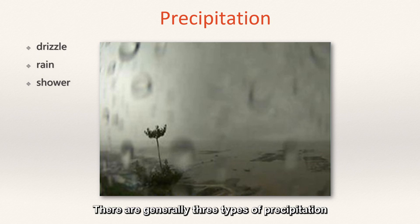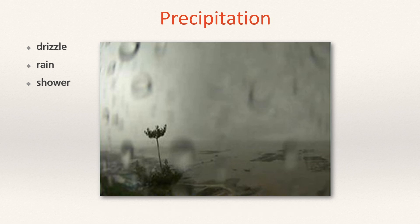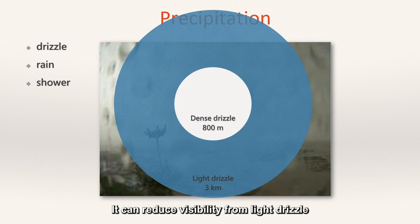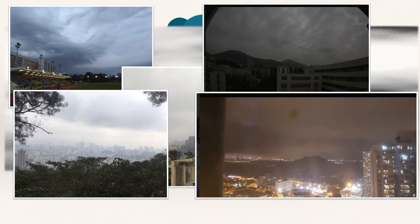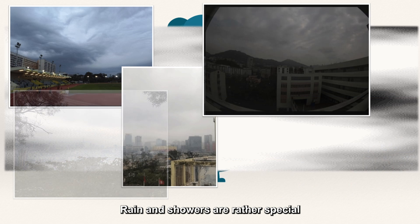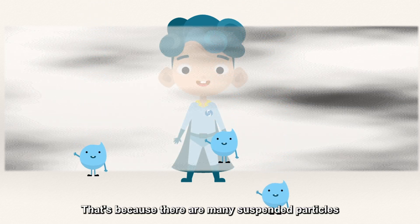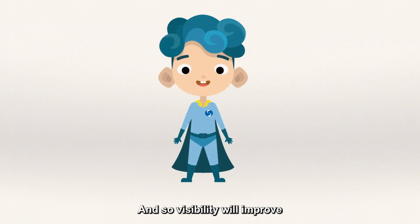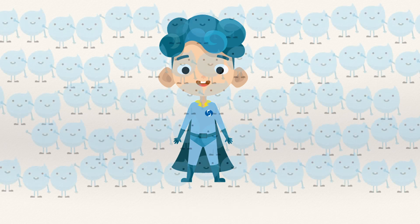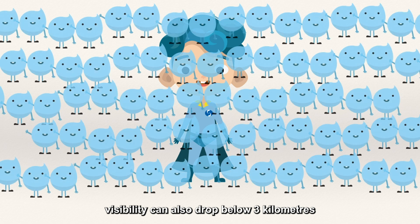Lastly, precipitation. There are generally three types of precipitation in Hong Kong: drizzle, rain, and showers. Drizzle is the precipitation phenomenon that can affect visibility the most — it can reduce visibility from light drizzle to about 3 kilometers, to very dense drizzle with visibility as low as 800 meters. Rain and showers are rather special: when the rain or shower is light, visibility will improve instead of deteriorate, because rain washes away suspended particles, sand and dust. But when the rain gets heavier, visibility can also drop below 3 kilometers.